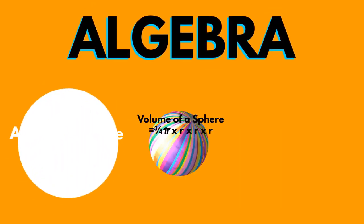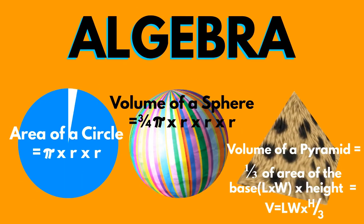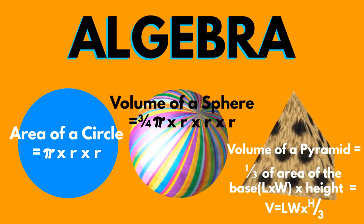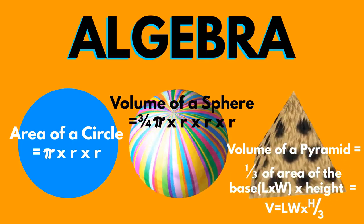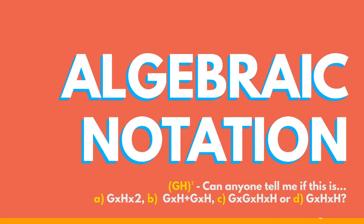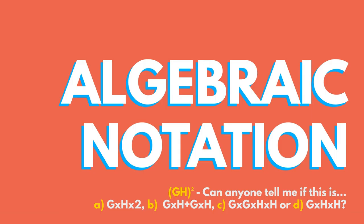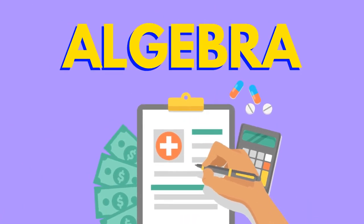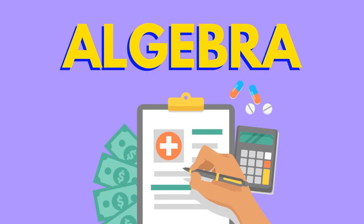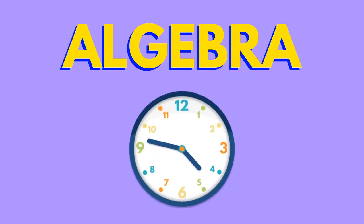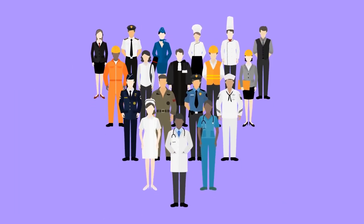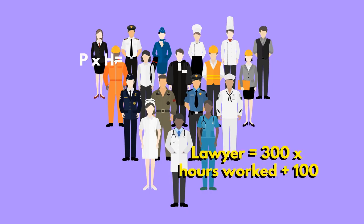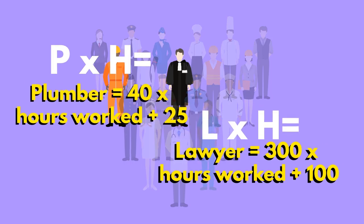Algebra lets you describe and represent patterns using concise mathematical language. Using letters and symbols to represent numbers is known as algebraic notation. If we need to work out the volume of an object, using algebra to do it instead of physically working it out saves us time and effort. Many careers and professions use equations to make quick judgements and perform practical calculations.